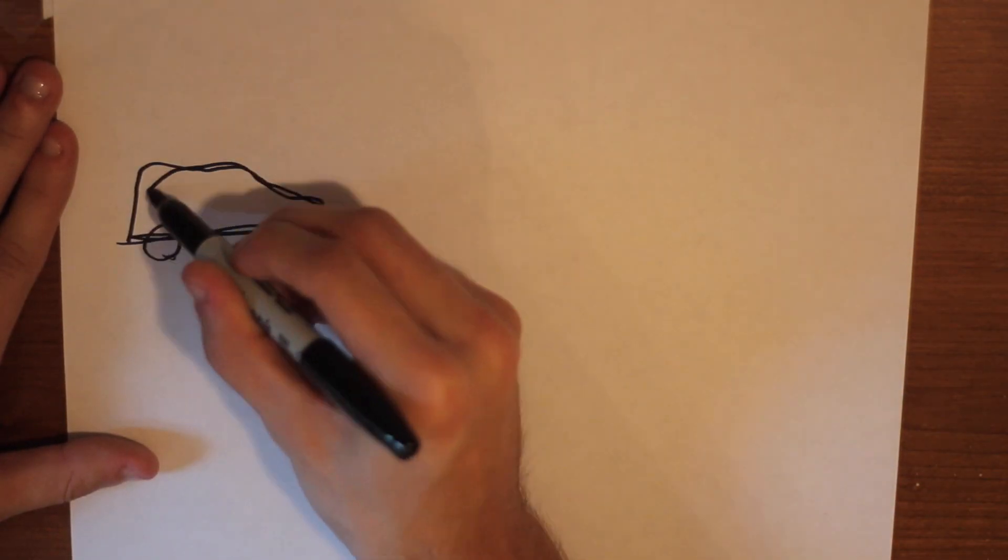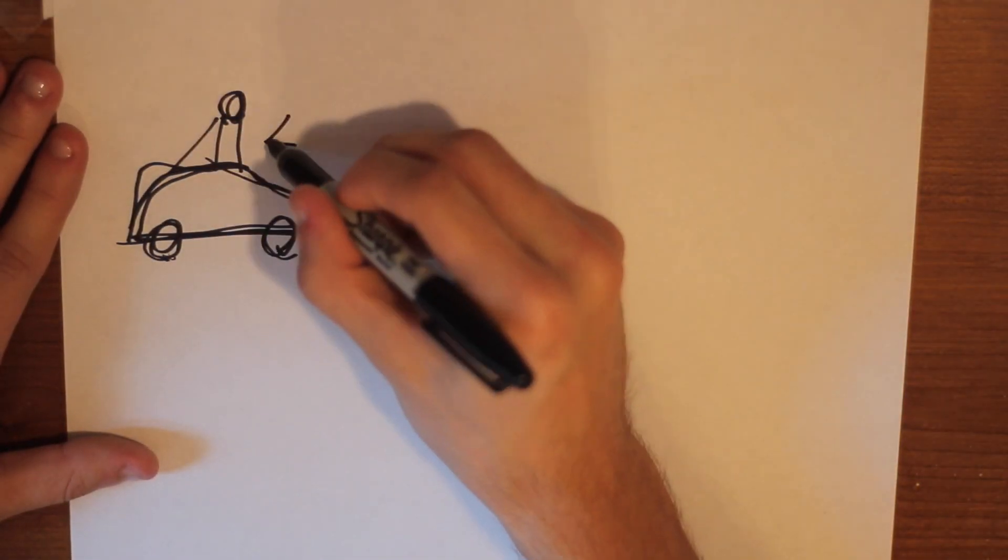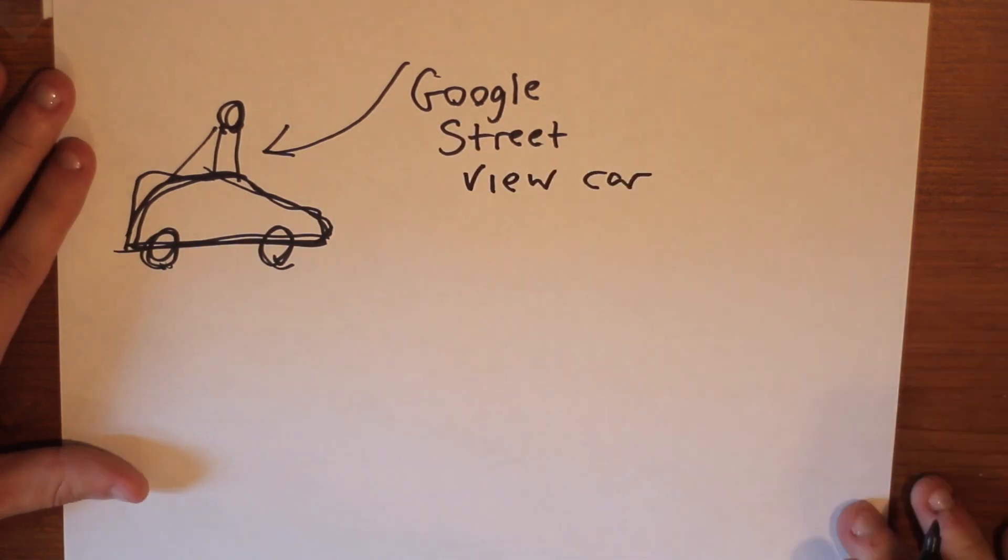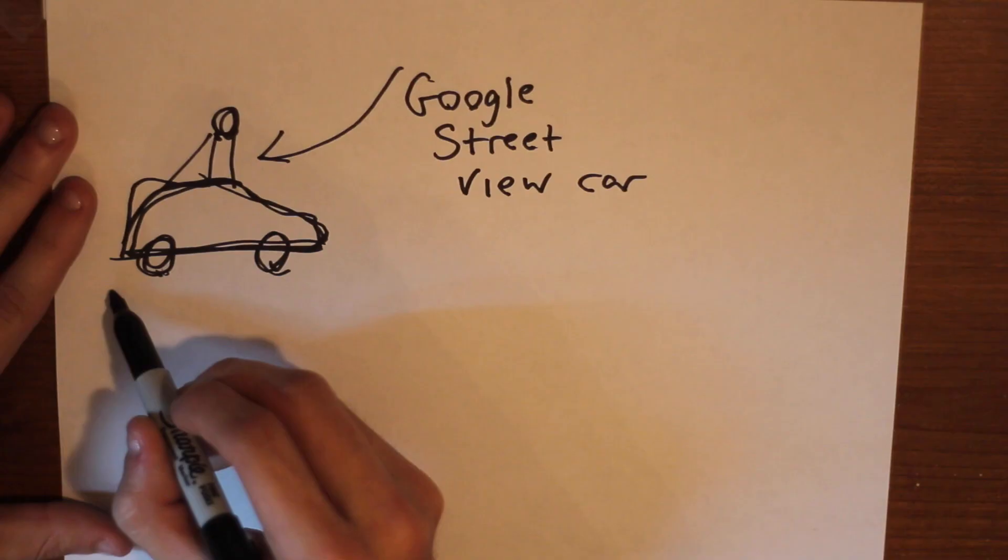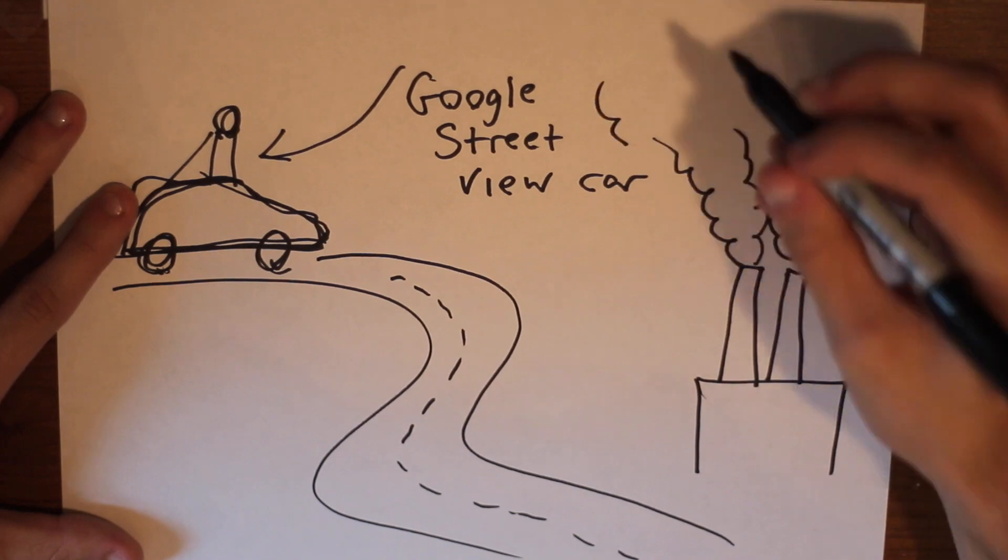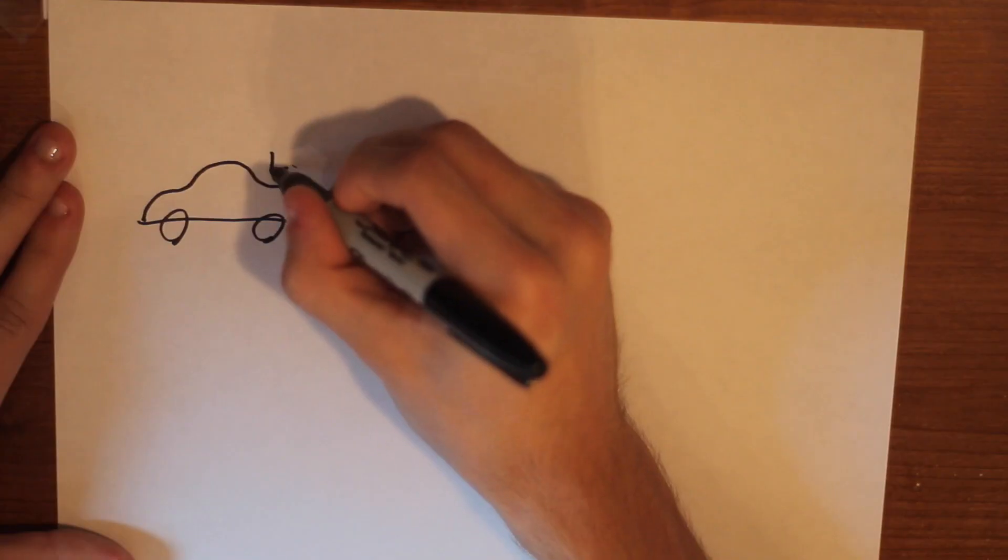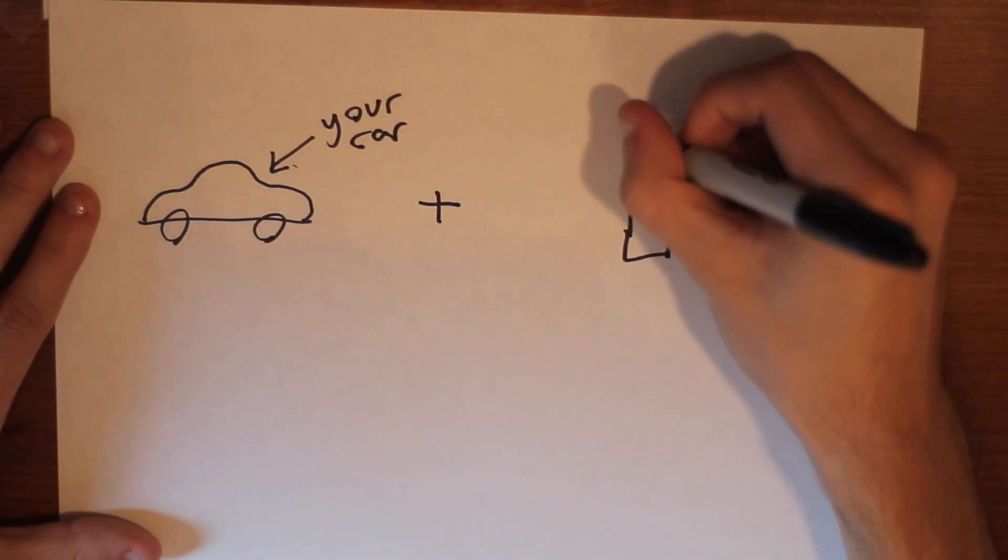In terms of how we can deploy this technology, we've got a few different options. First, Google already has a bunch of Street View cars patrolling around the country, and they've already been co-opted for collecting research about air pollution. A second option could enable regular people to participate